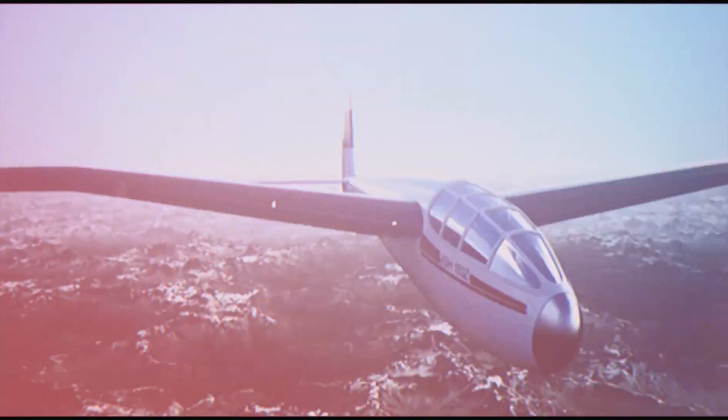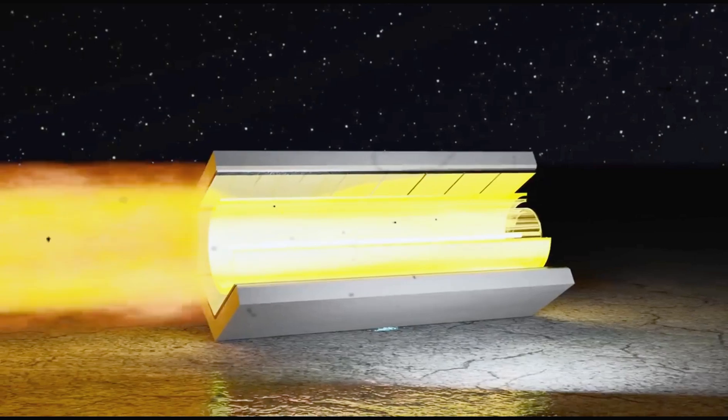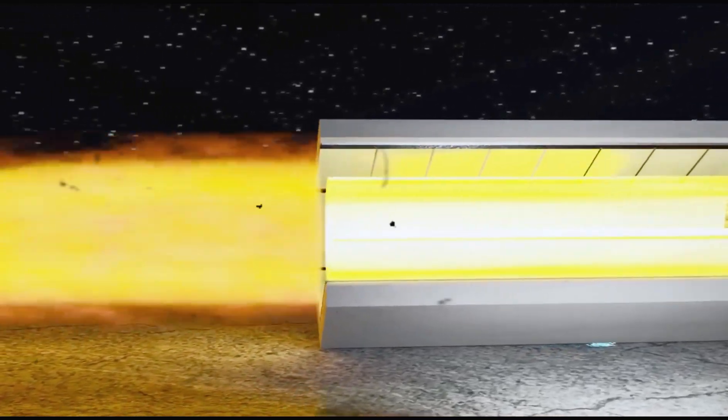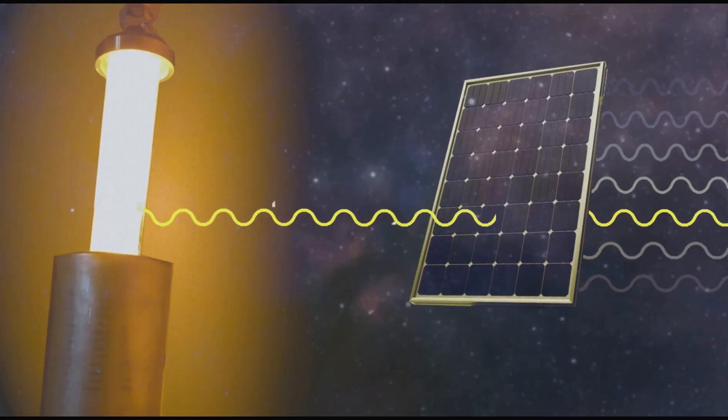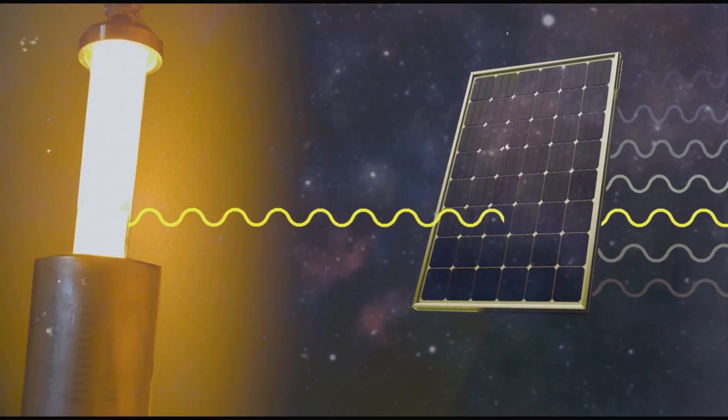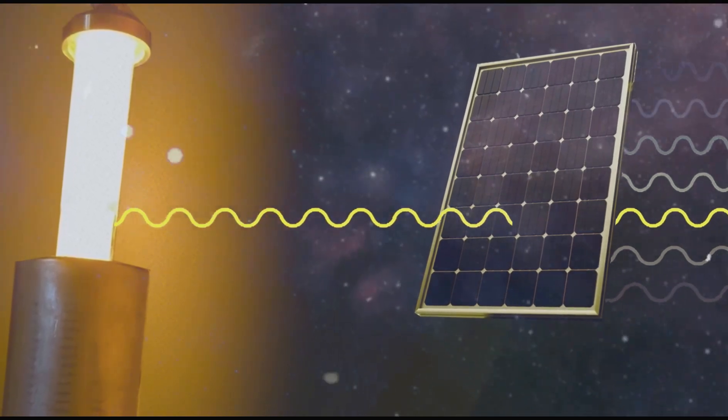And here's the kicker. The creators of the light cell engine claim that it can reach efficiencies as high as 70% to 80%. That's at least twice as efficient as the average internal combustion engine, and even better than electric batteries. And if you're thinking this all sounds too good to be true, you're not alone.